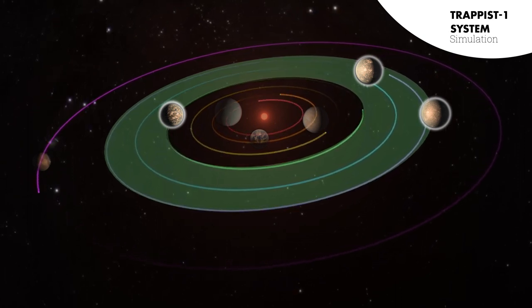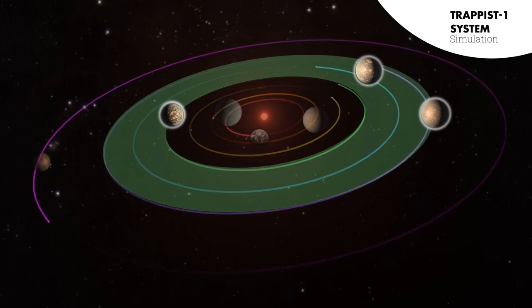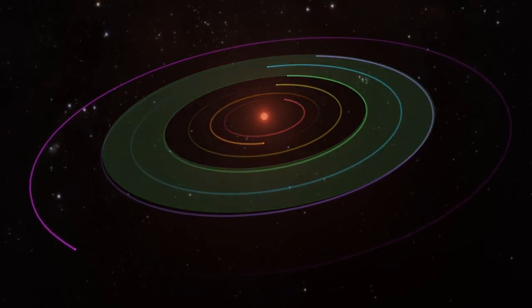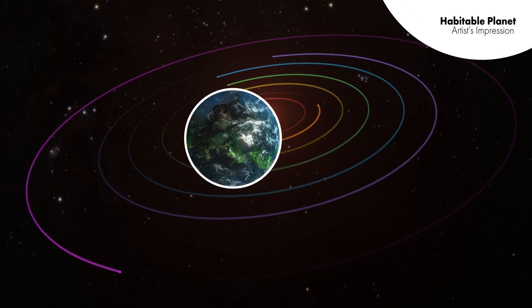The Hubble Space Telescope can tell us whether these planets have hydrogen-rich atmospheres, like icy gaseous Neptune, or atmospheres more like rocky Earth.